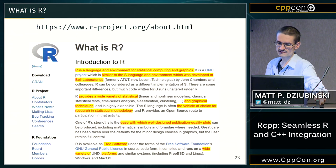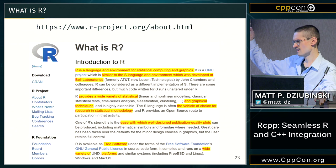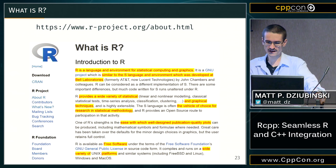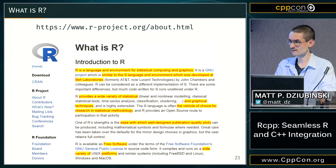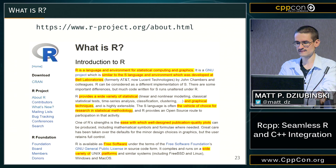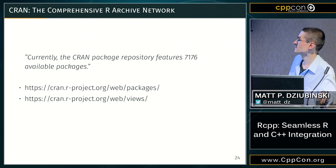R offers a wide variety of statistical and graphical techniques. It's the vehicle of choice for research in statistical methodology, with ease of well-designed publication quality plots, free software, and cross-platform support. When we say 'wide variety of statistical and graphical techniques,' we mean there are over 7,000 packages — the R term for libraries — that you can download, install, and use just like that.